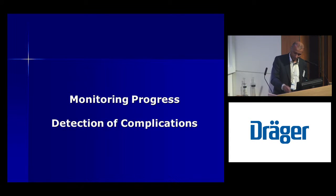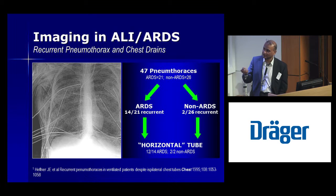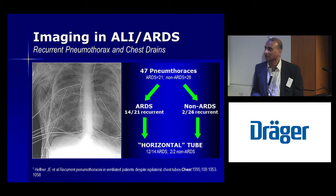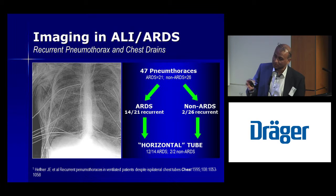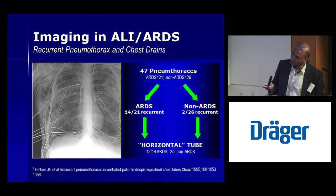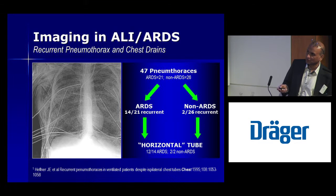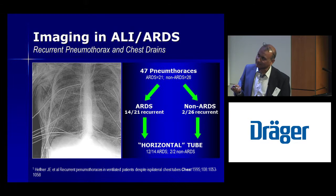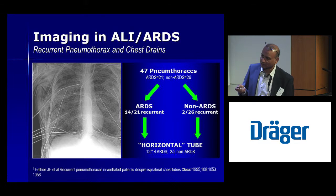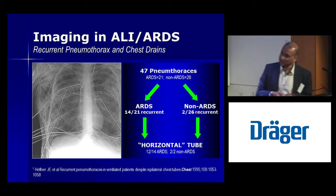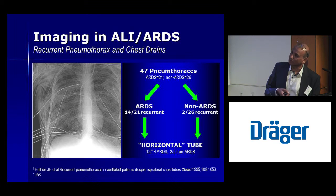I won't dwell too much on monitoring of progress, but chest x-rays — even a very white one — can provide useful information. A small study published in Chest showed that the position of the drain tube may be an important clue as to why patients are getting recurrent pneumothoraces. In ARDS patients, there is a higher proportion of recurrent pneumothoraces, and a horizontal tube orientation suggests the tube may be trapped within a fissure or between the lung surface and the diaphragm — an important clue for management.